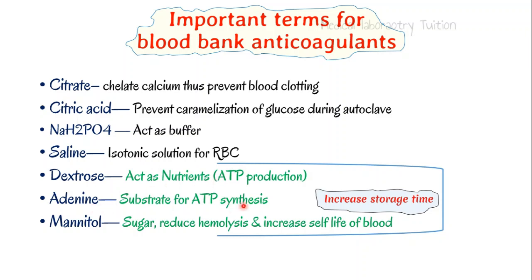Adenine: as you know, ATP stands for adenosine triphosphate. Adenosine is a very important component, and adenine is a substrate for it — adenine acts as a substrate for the synthesis of ATP. Mannitol is a sugar that reduces hemolysis of blood and increases the shelf life of blood. Dextrose, adenine, and mannitol are very important for increasing the storage time of blood in the blood bank.